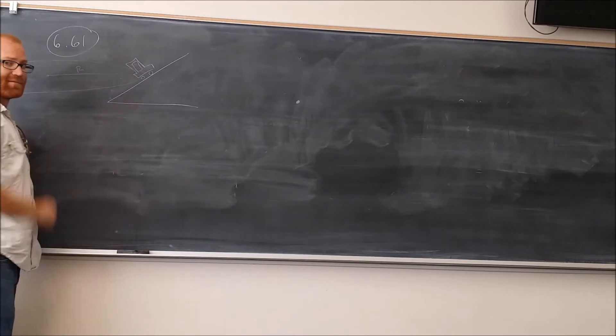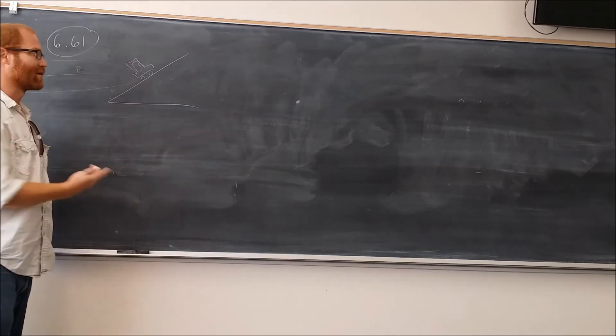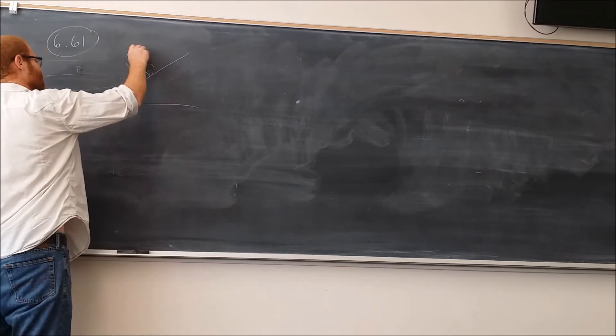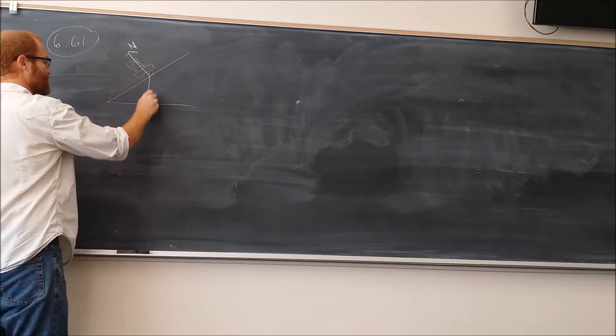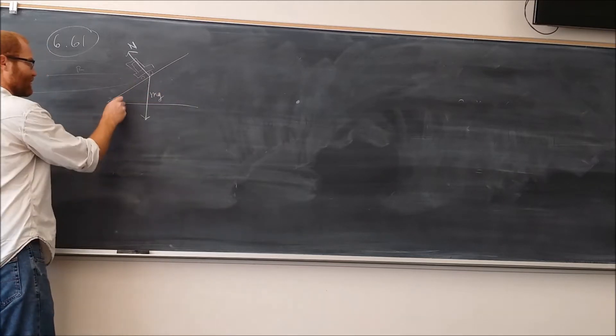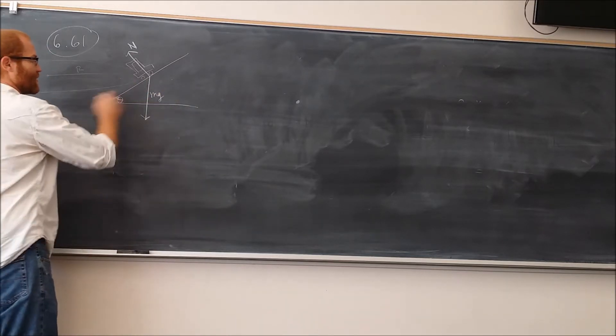The first thing to do in this kind of problem is to identify the forces on the car. The forces that we have are going to be the normal force, which points up like this. You've got mg, which points down here. This is the angle of beta. You also have the friction force.